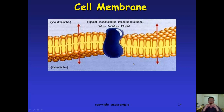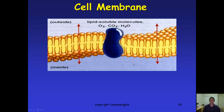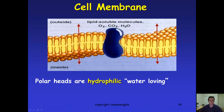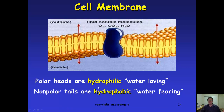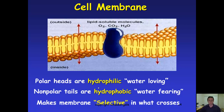The membrane does allow certain materials to go through it freely while blocking others. For example, things like oxygen and carbon dioxide will get through the membrane as if it's not even there. Cholesterol and fat will also pass freely. But when you look at bigger things like proteins, and polar things like ions, all of these are blocked. The membrane is what we call selective, with hydrophilic heads and hydrophobic tails forming the bilayer.